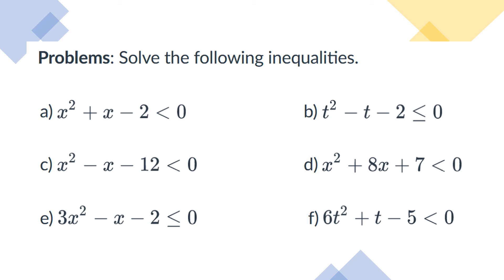You can try the practice problems provided. If you're not familiar with factoring when the leading coefficient is not 1, look at the video about the criss-cross method. Also, note the difference between a strict inequality and one with an equal sign: with an equal sign, corner points are included and you use closed intervals; with a strict inequality, corner points are not included and you use open intervals.